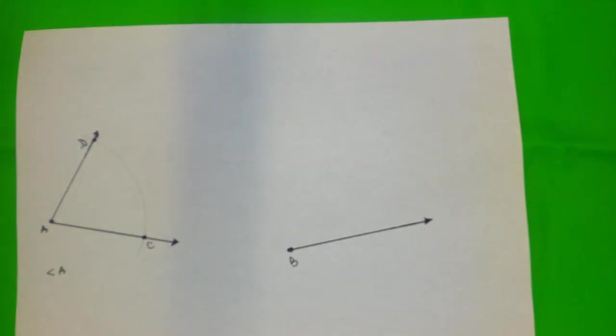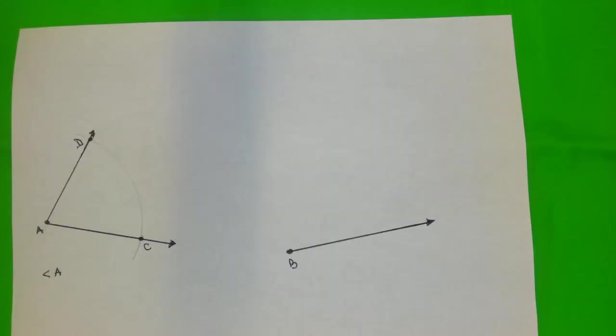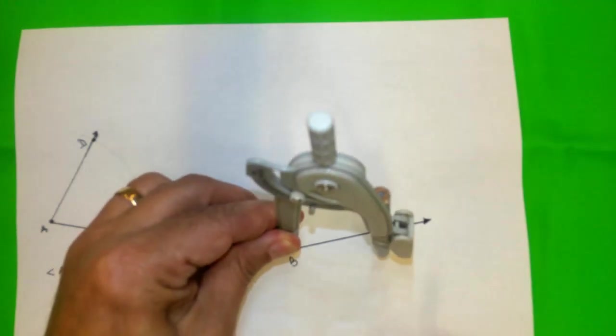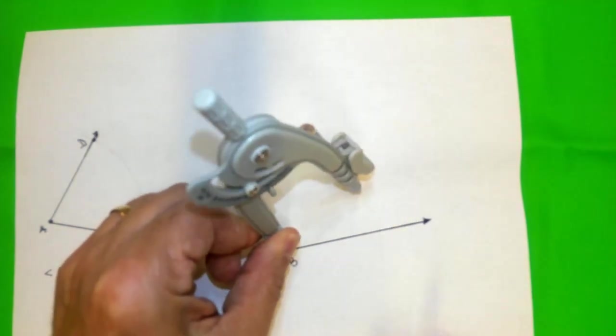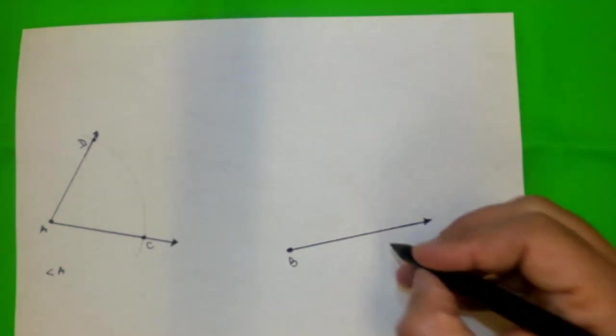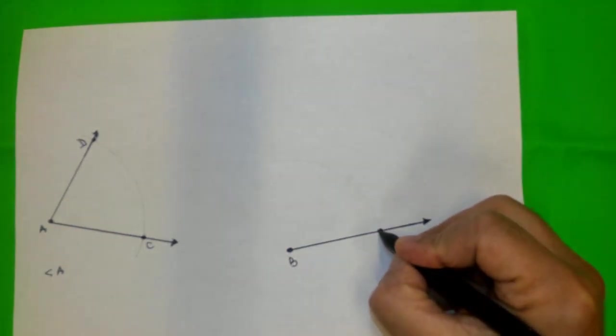So, now we're going to do the same thing on the other side. We're going to draw a big arc. We do have an intersection point here. Let's call it E.